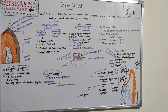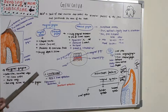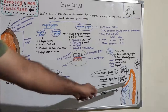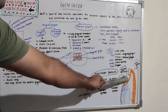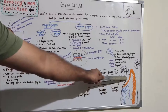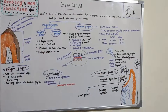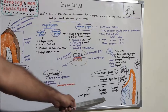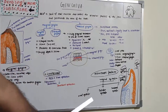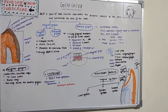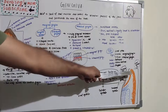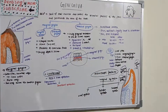Gingiva develops when oral epithelium joins with reduced enamel epithelium. Once the enamel is laid down, the epithelium covering the tooth is known as reduced enamel epithelium, which joins with oral epithelium and becomes junctional epithelium. We also have sulcular epithelium, seen in the gingival crevice, and oral epithelium that covers the outer surface of Gingiva. So there are three types: oral epithelium, sulcular epithelium, and junctional epithelium.